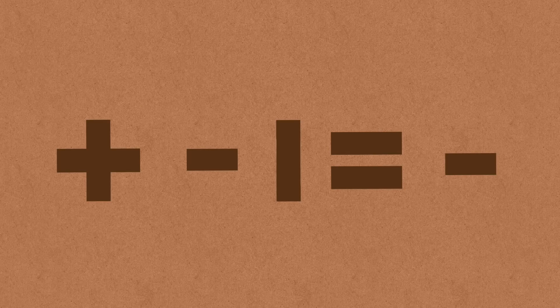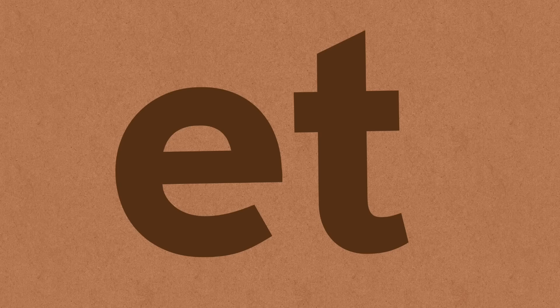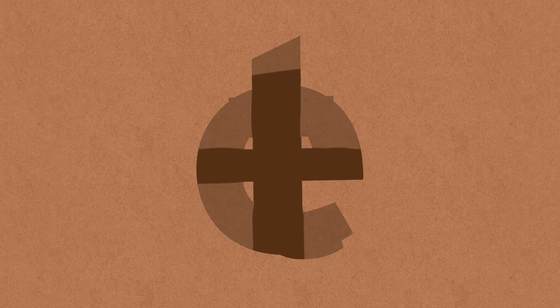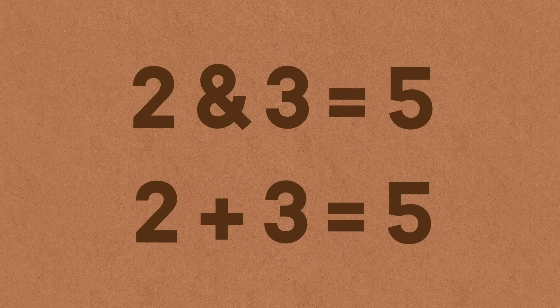I also really appreciate how the minus symbol looks like the plus symbol minus its vertical line. Another theory as to where the plus sign comes from is that it's simply a corruption of the Latin word for 'and' — 'et' — which is the same source of the ampersand too. This makes sense, as plus is basically the same word as 'and'. Saying '2 and 3 equals 5' is the same as saying '2 plus 3 equals 5'.